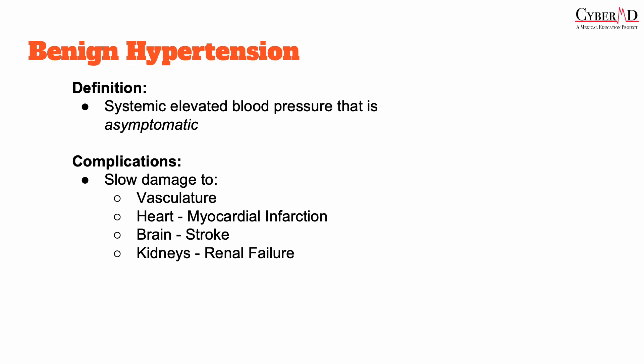Hypertension can be classified as benign or malignant based on the severity of the elevation in blood pressure and the associated clinical presentation. Benign hypertension — also referred to as essential or primary hypertension — is the most common type and is usually asymptomatic. It is a chronic condition that slowly damages blood vessels and organs including the heart, brain, and kidneys over time. If left untreated, it can lead to complications such as heart attack, stroke, kidney failure, and vision loss, but the big thing is that it remains asymptomatic. This is very much in contrast to malignant hypertension.